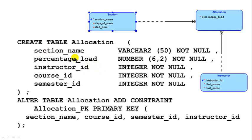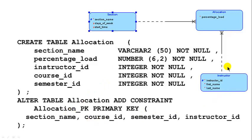Percentage load is the only attribute allocation has of its own. Because the two relationship lines are solid, all borrowed attributes are required. They are also part of the primary key, so they must be not null. The primary key of allocation is course ID, section name, semester ID plus instructor ID.